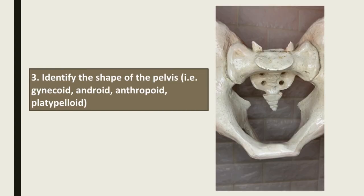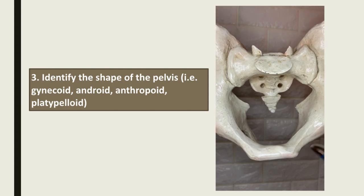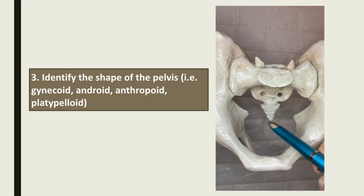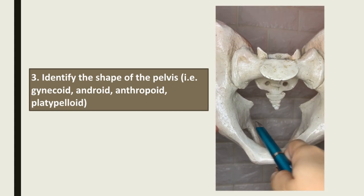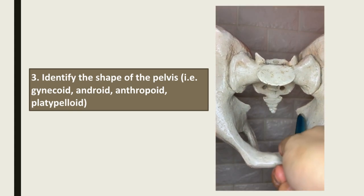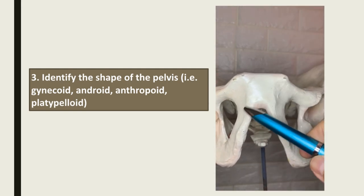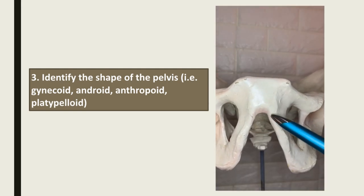We have to identify the shape of the pelvis, whether it be gynecoid, android, anthropoid, or platypelloid. We consider the general shape of the linea terminalis, the curvature of the sacrum, and the prominence of the iliac spines. For this pelvis, we have the general shape of a heart, a narrow pelvis, prominent spines, and a narrow sub-pubic arch — so this is an android type of pelvis.